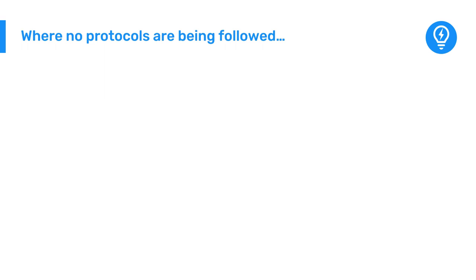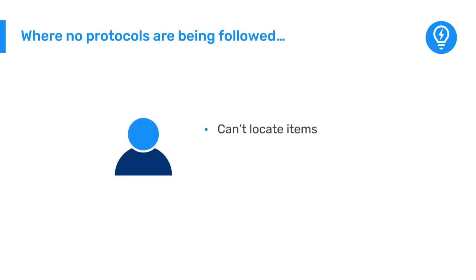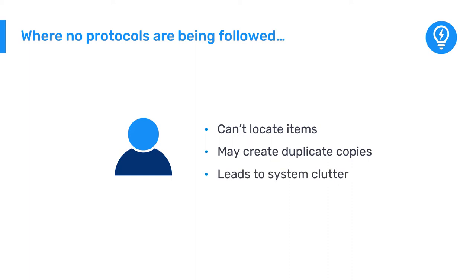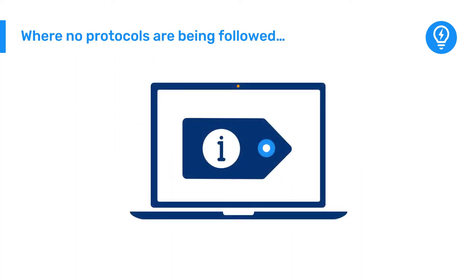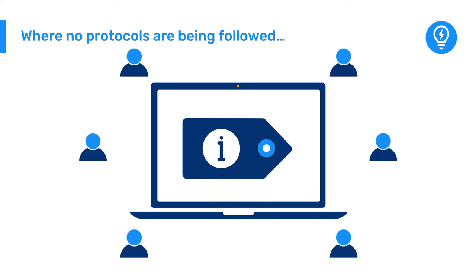Where no protocols are being followed, users may find it difficult to locate the items they need. If they can't locate items, they may create duplicate copies out of a belief that they do not already exist in the system, leading to system clutter and confusion for other users over which of the duplicate items is the correct one to use. This issue will compound itself over time as more data elements are added to DHIS2.